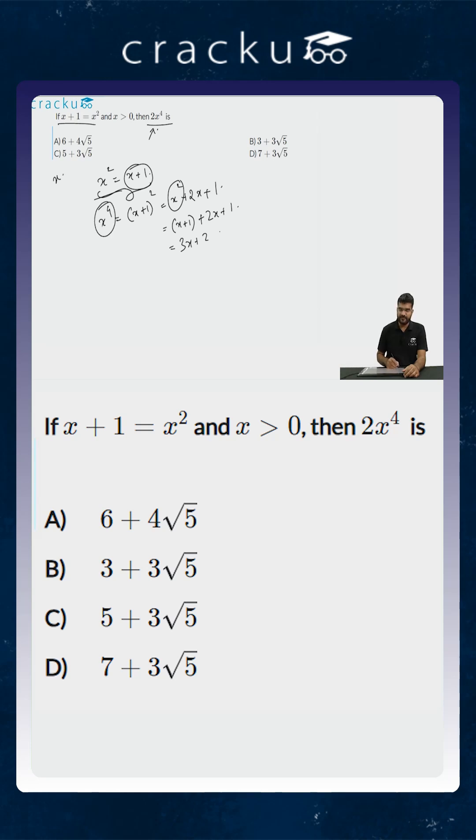So x to the power 4 is equal to 3x plus 2, or 2x to the power 4, which is what we are required to find out, is equal to 6x plus 4. Now let us solve the quadratic equation and then we can just multiply it by 6 and find the answer.